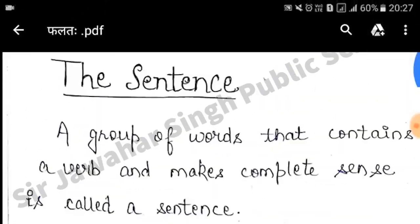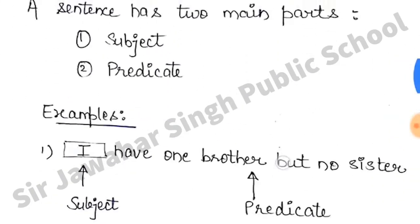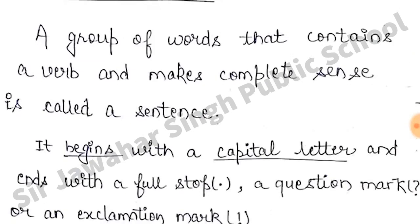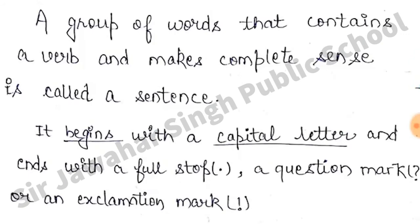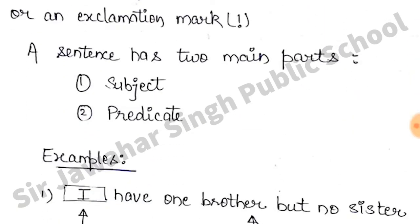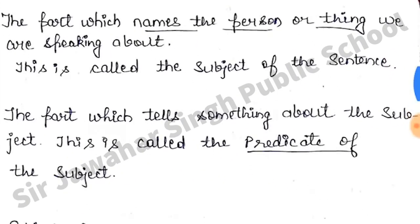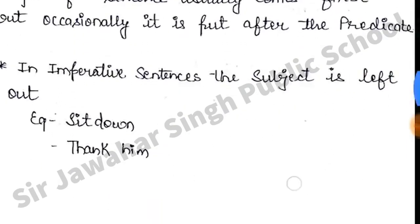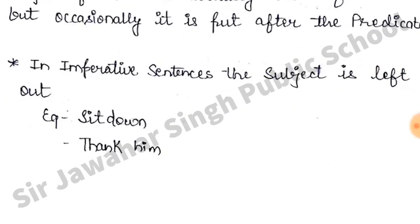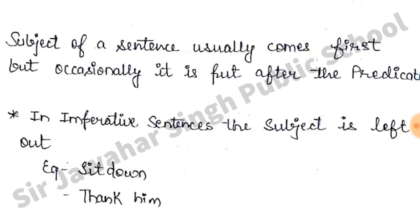So in this video, we have seen what a sentence is and what the parts of the sentence are. The sentence starts with a capital letter and ends with a full stop, question mark, or exclamation mark. The two main parts are subject and predicate. The subject is the name of the person or thing we are talking about, and the predicate tells something about the subject. In the next video, we will see the types of sentences and cover the whole English grammar.